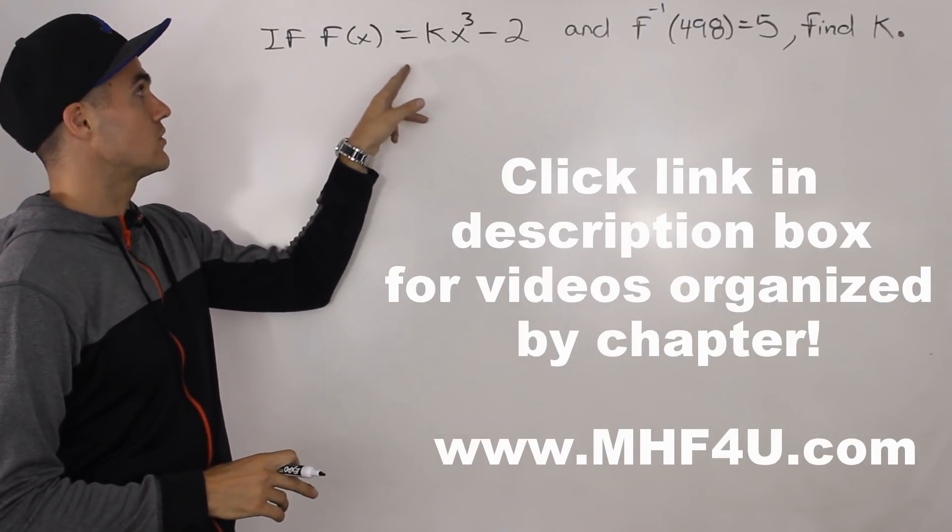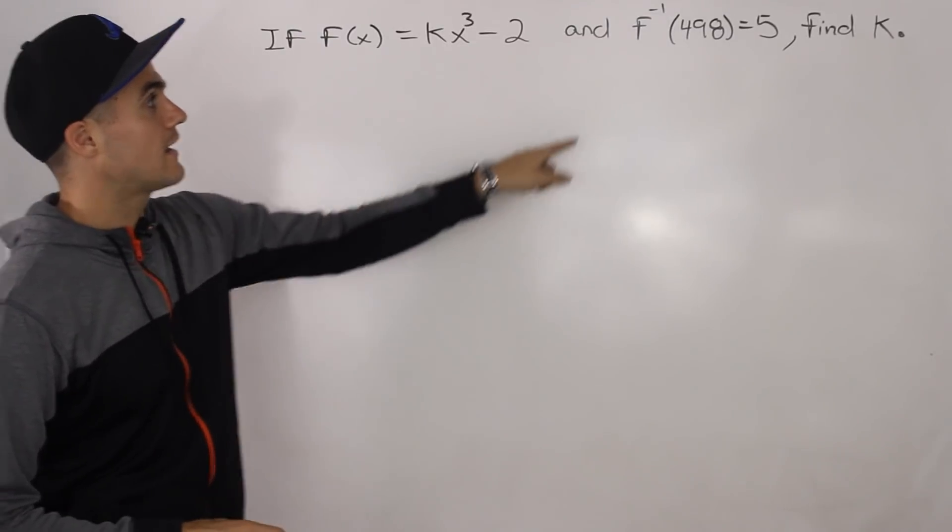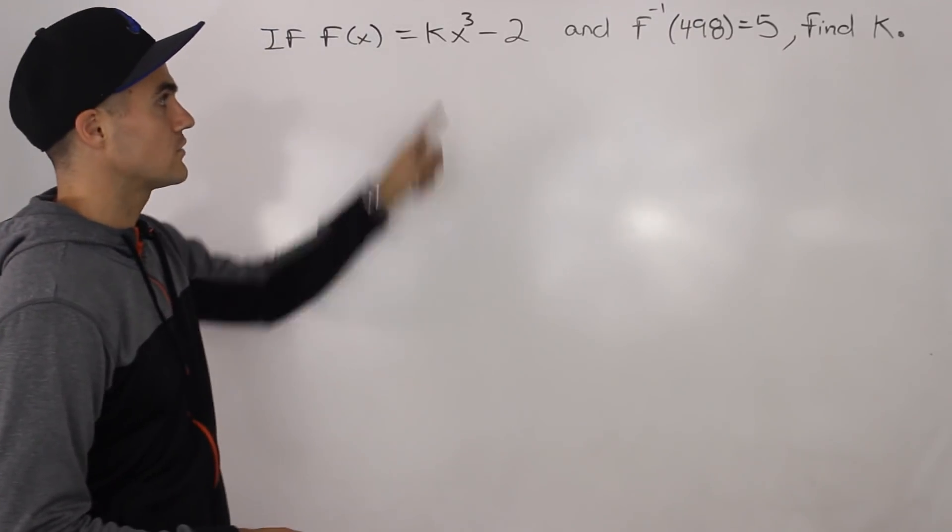So if f(x) equals k x cubed minus 2, and f inverse of 498 equals 5, we have to find this k value here.